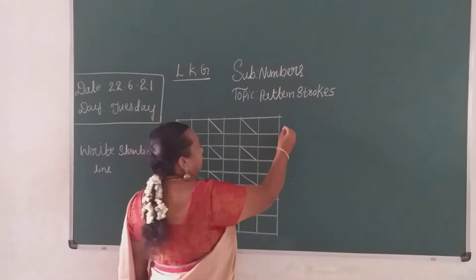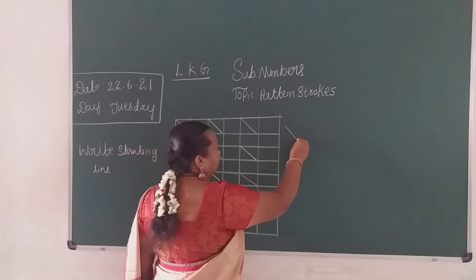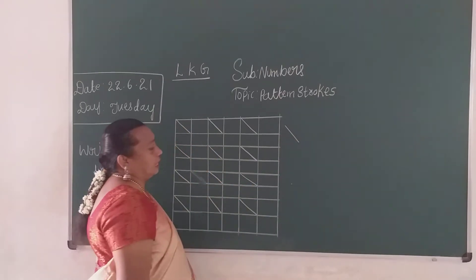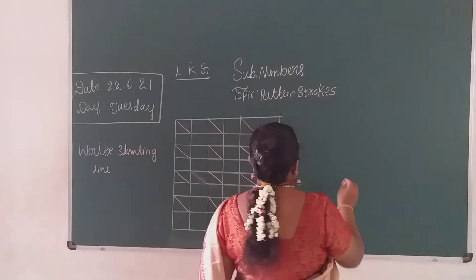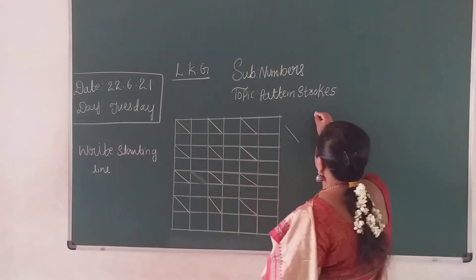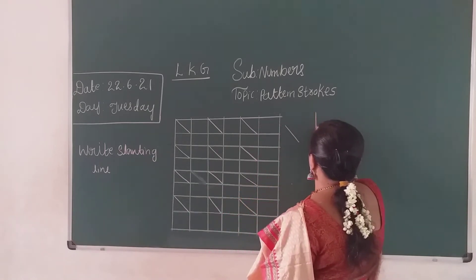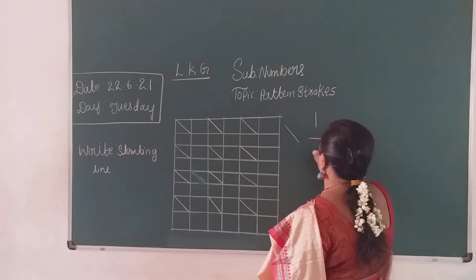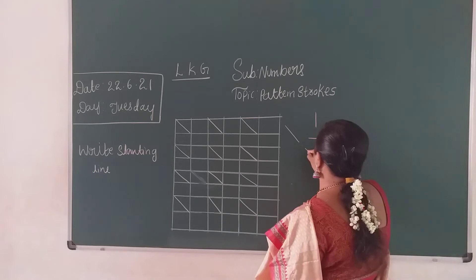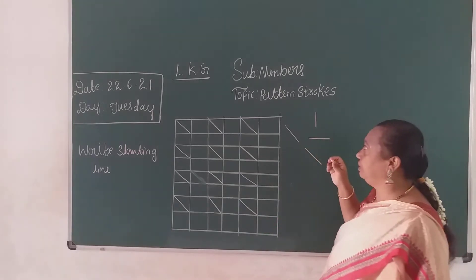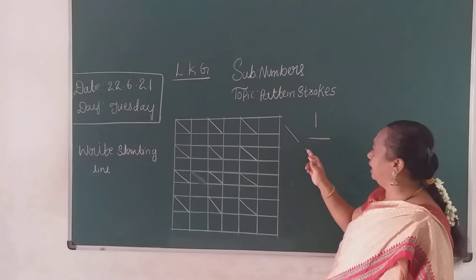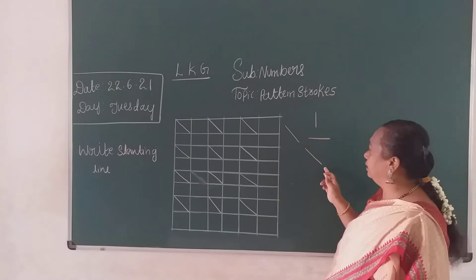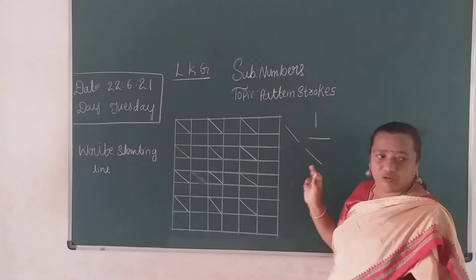See here like this, we have to do children, okay? What is it? Slanting line. What are you going to finish children? Number one. Standing line finished. Sleeping line finished. Now slanting line. Pattern strokes number one: standing line, sleeping line, right slanting line. Okay children.